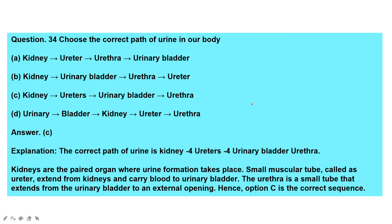Question: Choose the correct path of urine in the body. The correct path is: kidneys (where urine is formed) → ureters (small muscular tubes extending from kidneys) → urinary bladder → urethra (small tube from bladder to external opening). Therefore option C is the correct answer.